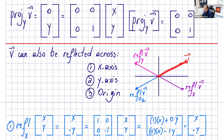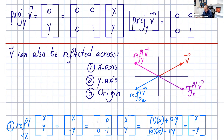We can also take our vector and reflect it across the x-axis. If I reflect this vector across the x-axis, the x component doesn't change but the y component becomes negative. That's the reflection of v across the x-axis. If you reflect it across the y-axis, the y component doesn't change and the x component becomes negative. And across the origin, you get negative x and negative y.